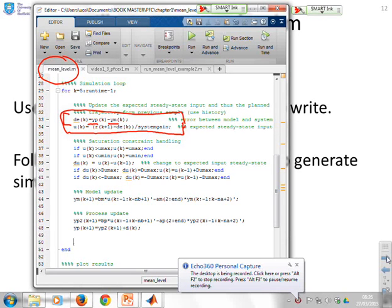If you need to do input constraint handling, you'll notice the lines are very simple. If the input's bigger than the maximum allowable, set it to the maximum allowable. If it's less than the minimum allowable, set it to the minimum allowable. And then these next three lines do rate constraints. If the input's changing too fast, then simply set it to the rate limit. So that's a saturation constraint handling. But the key thing is you can see the coding is very simple.